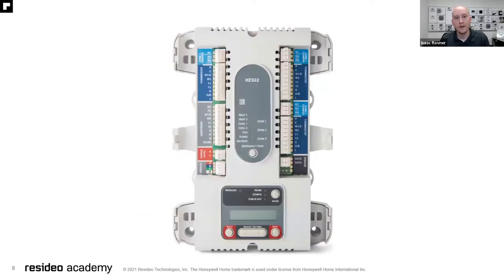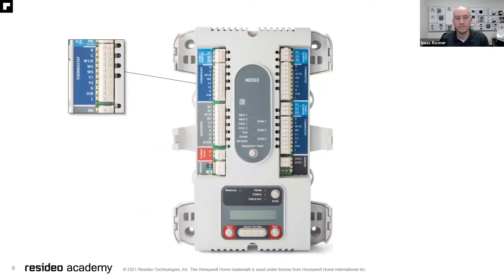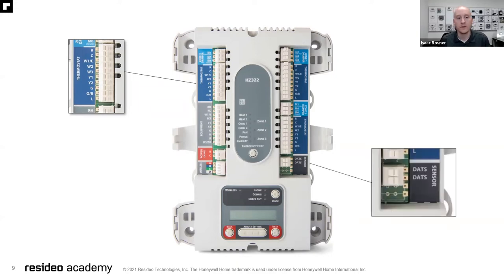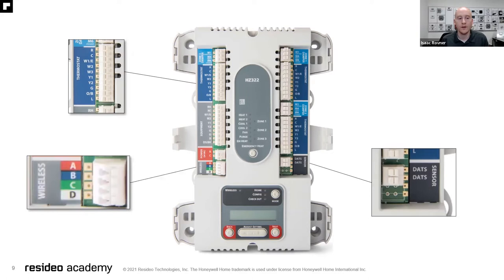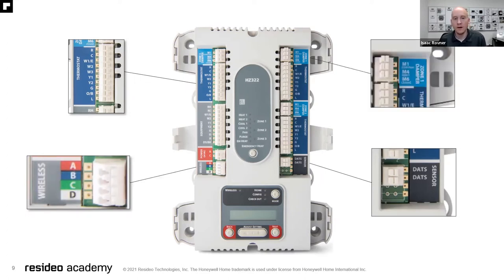Here we have our thermostat terminals — these are all dry contacts, meaning there's no voltage going out. You can easily wire in a smart thermostat since we have the C common terminal there. We have our DATS connection, which is used for our discharge air temperature sensors. Our ABCD terminals at the bottom left are used for our wireless control. Then our damper wiring is attached to each thermostat — the damper is clearly labeled by zone. Zone one damper and zone one thermostat are grouped together, and we wire the damper to whatever thermostat controls that particular zone.